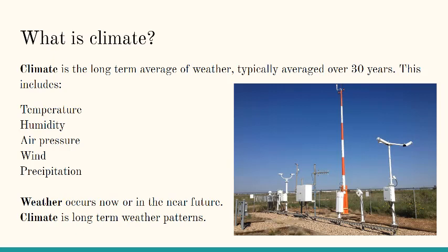This weather station measures temperature, humidity, air pressure, wind speed, wind direction, and gusts. It tells us if it's raining, snowing, or if there's sleet or freezing rain, how much rain has fallen, and if there's fog.